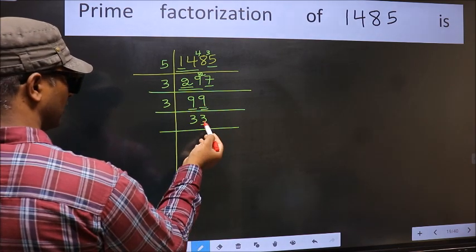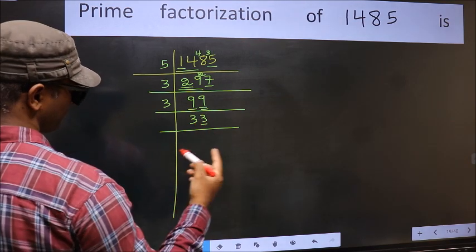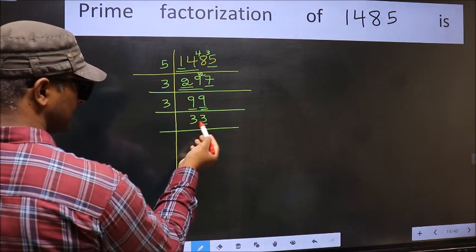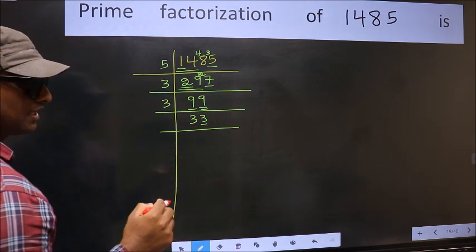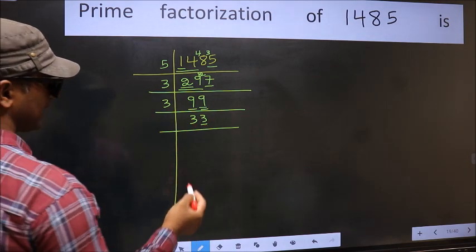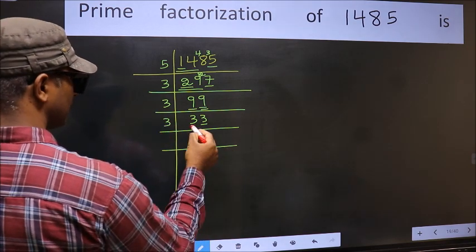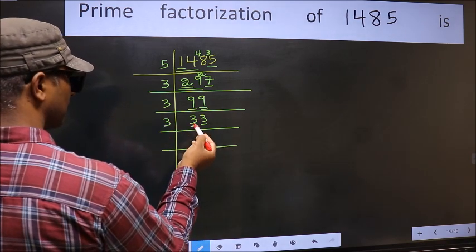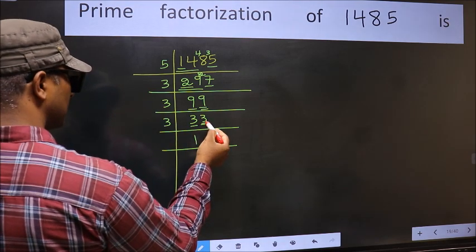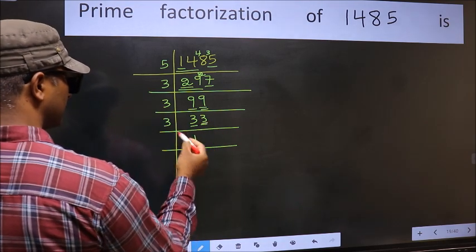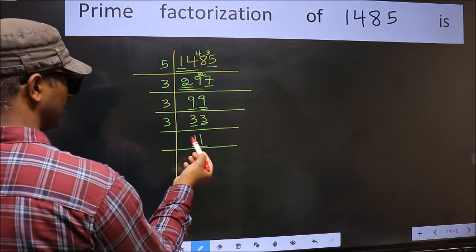Last digit 3 is not even, so not divisible by 2. And here each digit is 3, so it is divisible by 3, and 3 is the prime number. So take 3 here. First number 3 — when do we get 3 in the 3 table? 3 once is 3. The other number 3 — when do we get 3 in the 3 table? 3 once is 3. Now here we have 11.